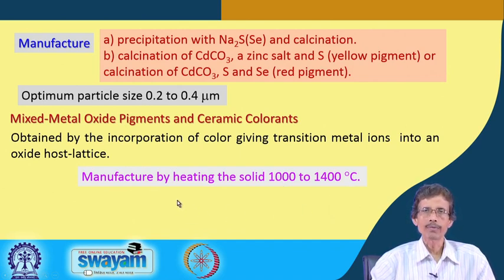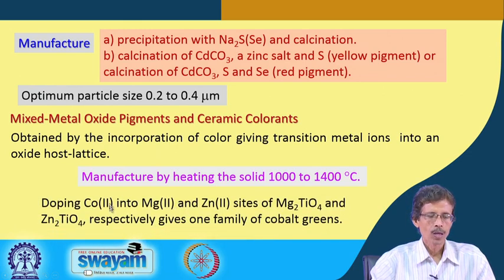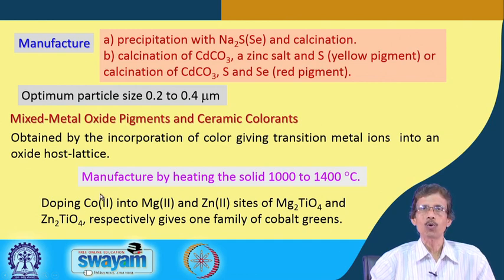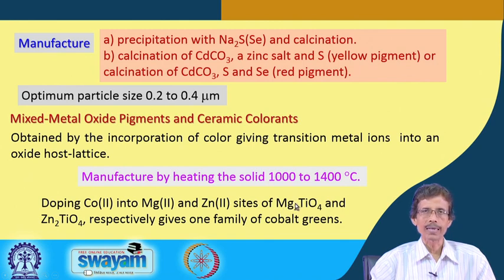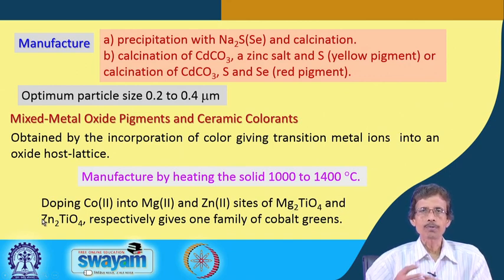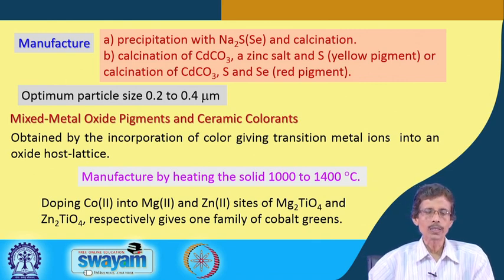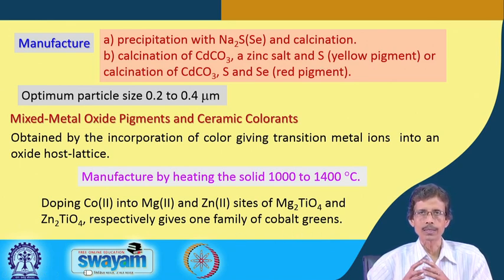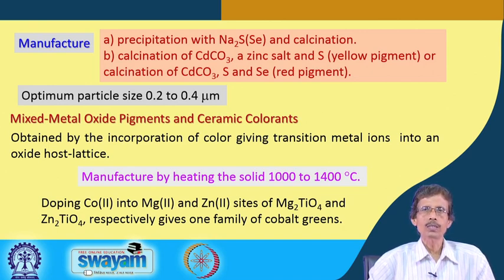Magnesium and zinc can be doped with cobalt as the coloring material. In magnesium titanate and zinc titanate, cobalt substitutes into the magnesium or zinc positions in the solid-state structure, giving the family of cobalt greens — cobalt imparts green coloration in the solid-state structure.